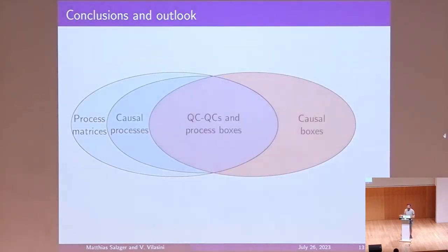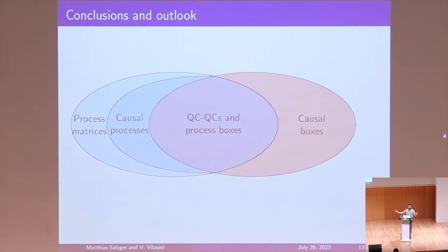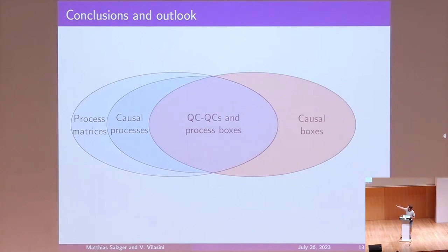If you've lost track at some point, now is the time to focus on this key picture. You have two frameworks — process matrices and causal boxes — and there is some overlap. What we showed is that this overlap consists of QCQCs and process boxes. I've given you some intuition for why this is true, and for the details you can look at the thesis. In particular, QCQCs and process boxes are causal processes, meaning they do not violate causal inequalities. This tells us we cannot violate causal inequalities in fixed acyclic spacetime.